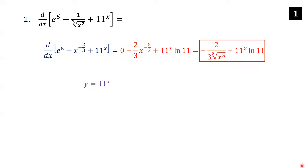If you were confused about how to get the derivative of 11 to the x, one way is simply to know the formula: the derivative of 11 to the x is 11 to the x times ln 11. But if you forget that formula, you can use logarithmic differentiation. Set y equal to 11 to the x, then take the natural logarithm of each side to get ln y equals ln of 11 to the x. Using the law of logarithms, move the exponent x out front.